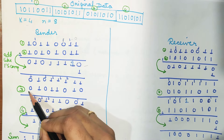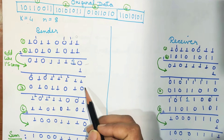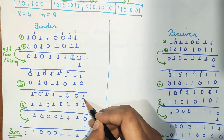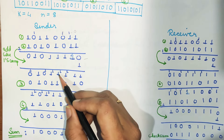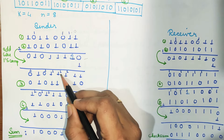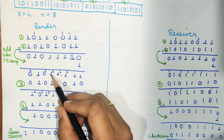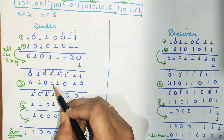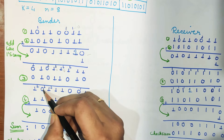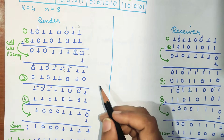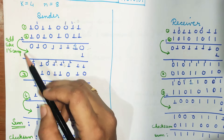Now the next block we want to add is the third block. We write the third block and add it again. 1+1 is 0 carry 1, 1+1 is 0 carry 1, then 1+1 is 0 carry 1, and 0+1 is 1. Again 1+1 is 0 carry 1 and 0+1 is 1. Then 1+0 is 1, 1+1 is 0 and carry 1, and 1+0 is 1. So now we have added 3 blocks — blocks 1, 2, and 3.